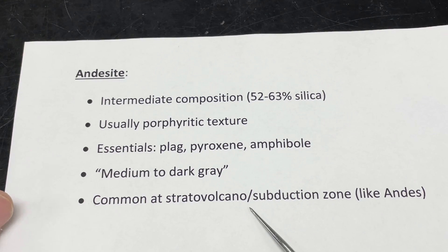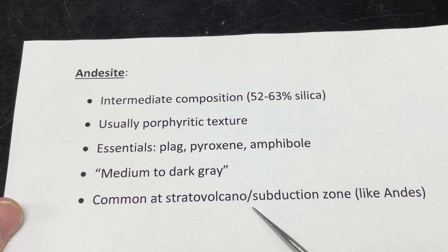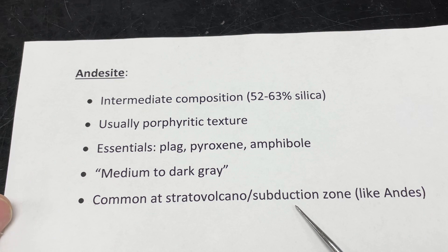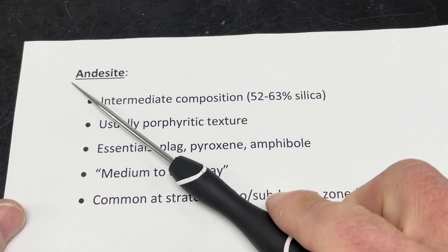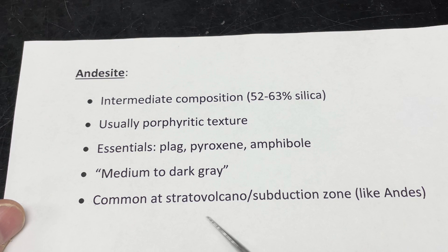Something that may help you associate andesite with its origin: it's a very common rock type at stratovolcanoes in subduction zones, where one plate is diving beneath another — places like the Andes, the Cascades, and the Aleutian Islands. You might notice that the word andesite has 'Andes' in it, and the Andes Mountains are a string of stratovolcanoes located along a subduction zone.